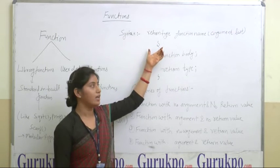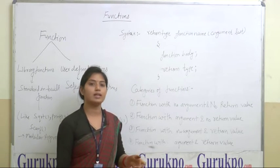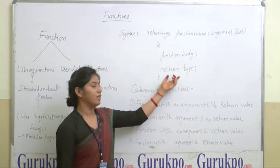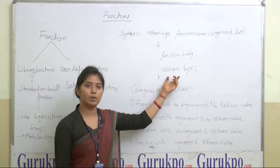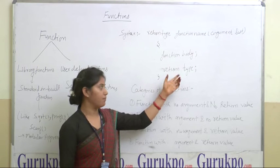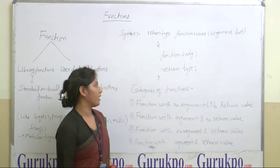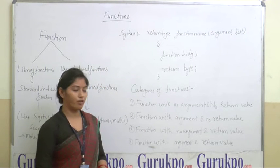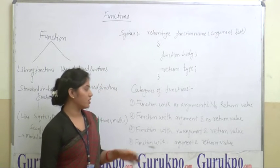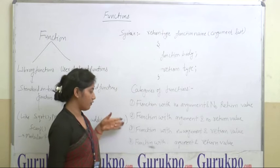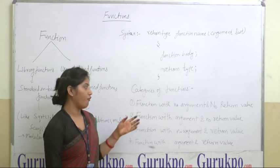If the function has a return type, we define the return value in the function — return 0 or an integer value, whichever applies. If it is void, there is no return value, so there is no need to write a return statement. Functions can also be categorized into four parts.